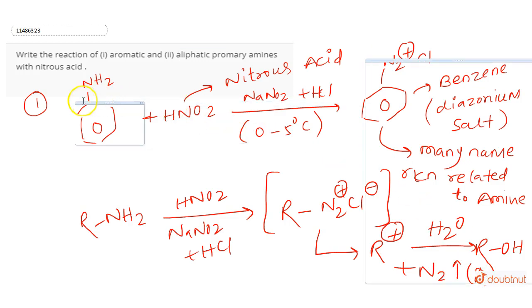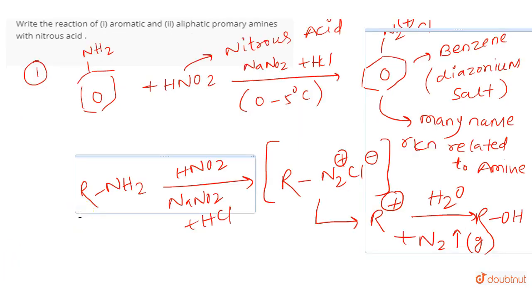In the case of aromatic amine, the benzene diazonium salt is formed, which is stable. But in the case of aliphatic amine, it first converts into the diazonium salt, but due to its unstable nature, it breaks down into a carbocation. When treated with water, the alcohol is obtained as the major product.